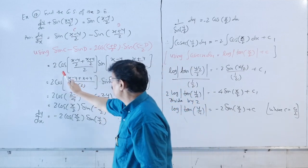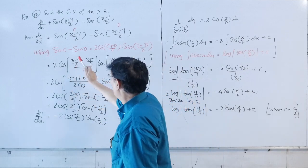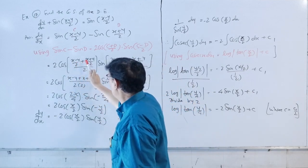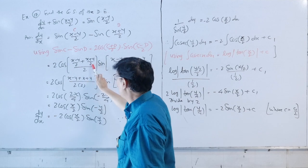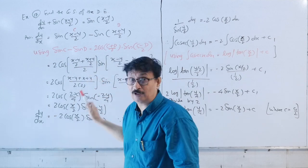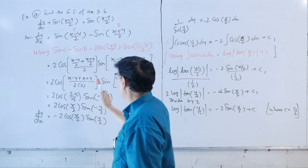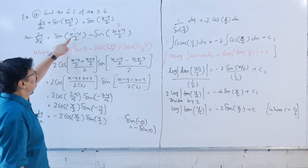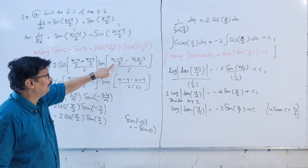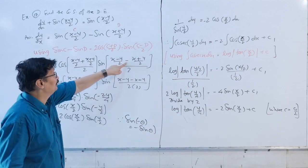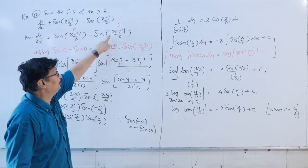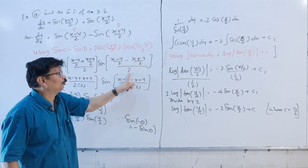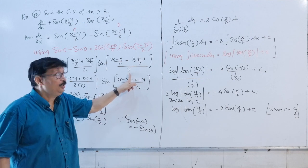So this becomes 2 cos of [(x - y/2) + (x + y/2)] / 2, into sin of [(x - y/2) - (x + y/2)] / 2. Simplifying the numerators inside each bracket.